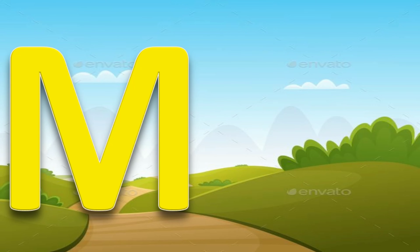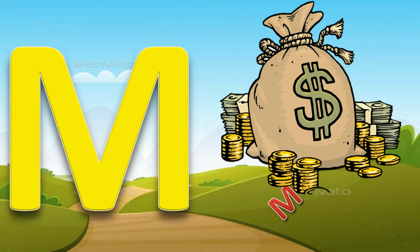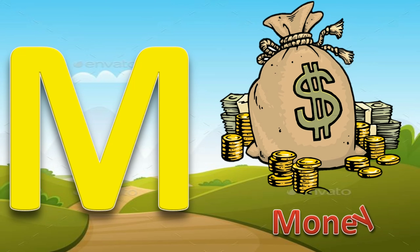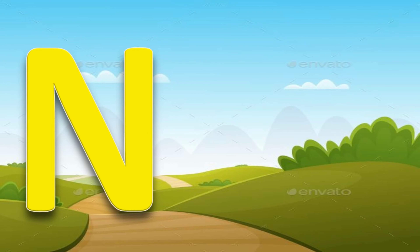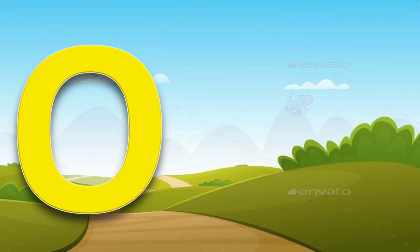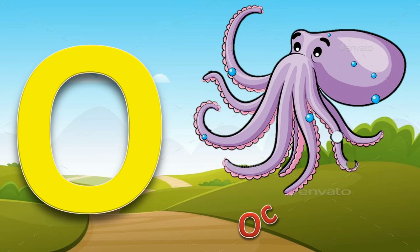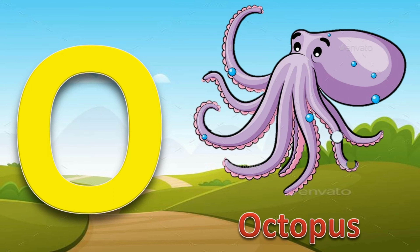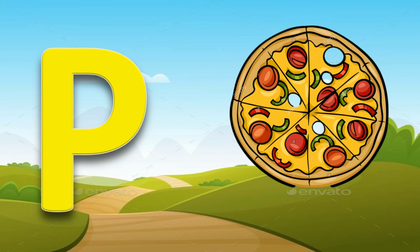M for money. N for nest. O for octopus. E for pizza.